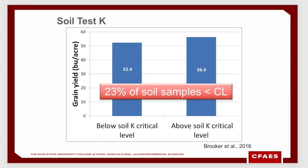How do the results compare to phosphorus from a yield perspective? For soil test K, we compared areas of the field that were below the critical level versus above the critical level. When the soil was below the critical level, there was about a 4 bushel yield reduction compared to above the critical level. So there were yield losses associated with those low soil test K soils.